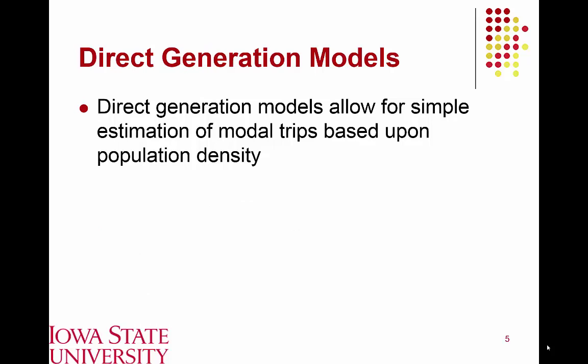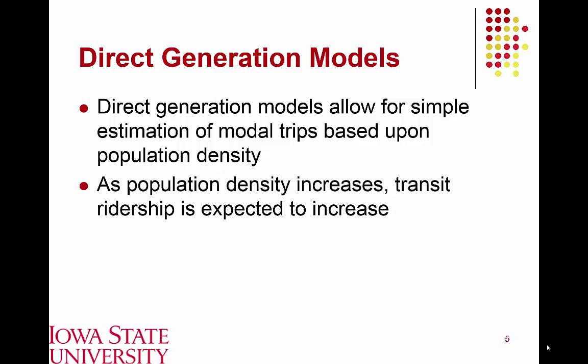Starting with direct generation models, these allow you to estimate modal trips based upon population density. These are relatively simplistic models that can be applied broadly on a community. As our population becomes denser — moving from rural Iowa, for example, to New York City — given the increase in population density, we would expect to see significant increases in transit ridership in that more urbanized environment.